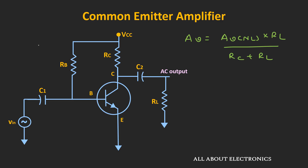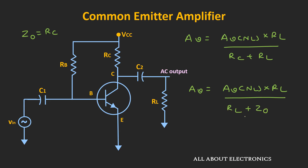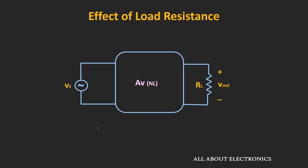For the common emitter amplifier, the output impedance is equal to Rc. So we can say the voltage gain equals the no-load voltage gain times Rl / (Rl + Z0), where Z0 is the output impedance. This is the expression for effective voltage gain when we connect a load to the amplifier. If the load resistance Rl is much greater than the output impedance, the overall gain will be the same as the no-load voltage gain. But if Rl is comparable to or less than the output impedance, the overall voltage gain will be less than the no-load voltage gain.